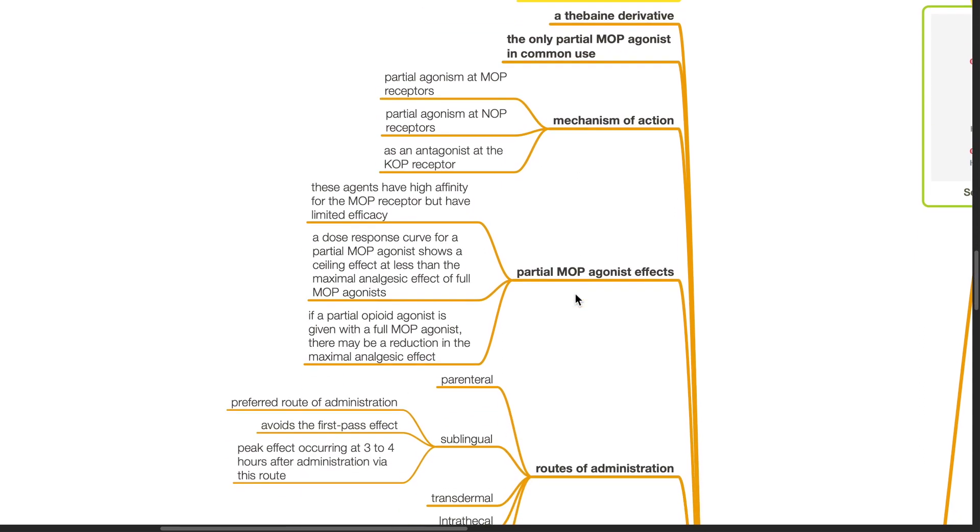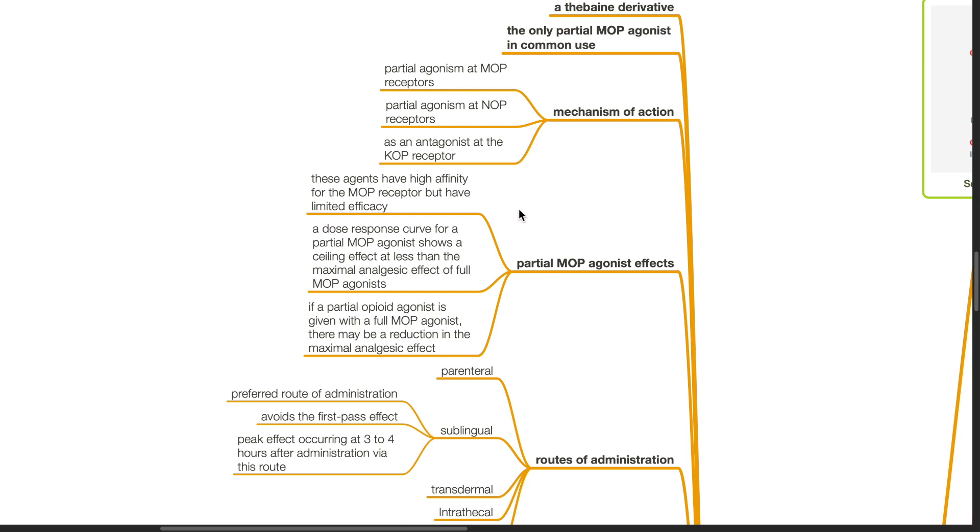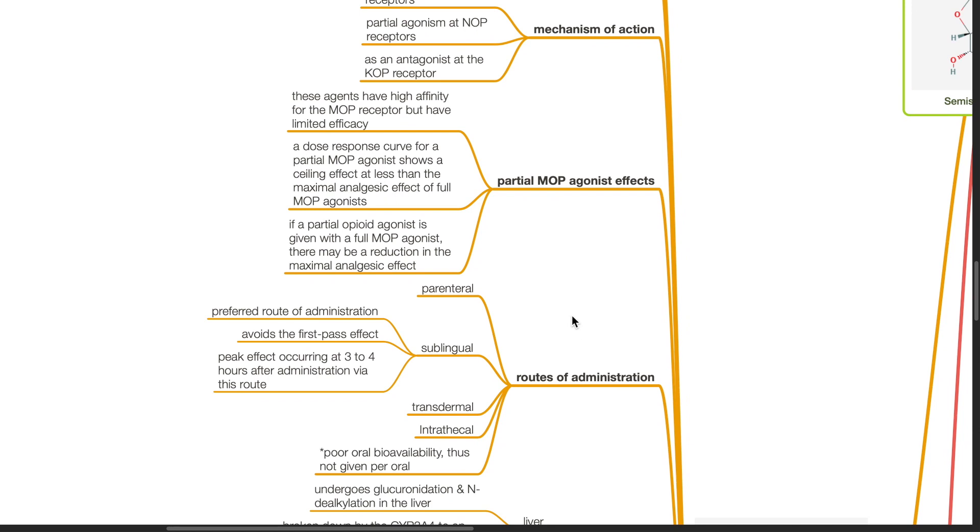Partial MOP agonist effects. These agents have high affinity for the MOP receptor but have limited efficacy. A dose response curve for a partial MOP agonist shows a ceiling effect at less than the maximal analgesic effect of a full MOP agonist. If a partial opioid agonist is given with a full MOP agonist, there may be a reduction in the maximal analgesic effect.